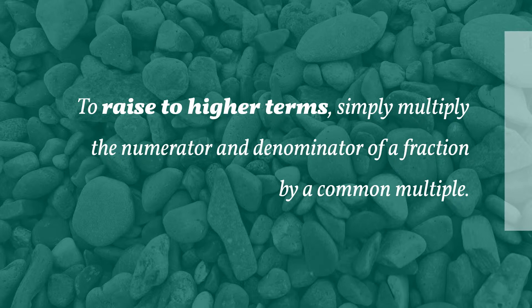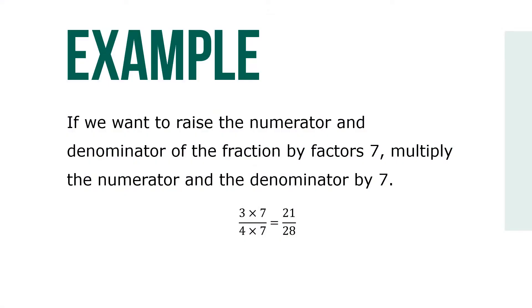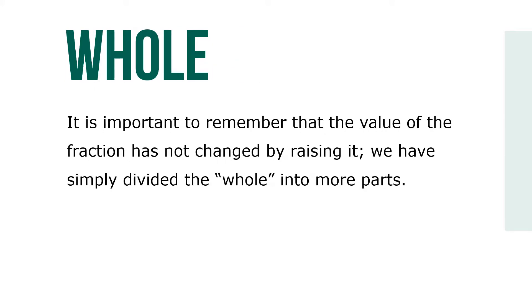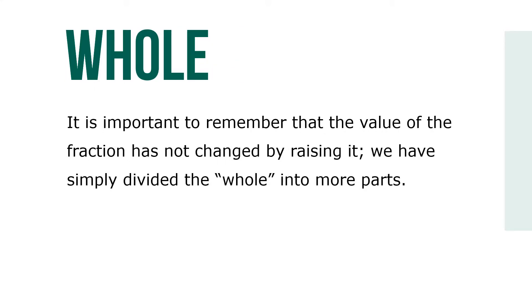To raise a fraction to higher terms, simply multiply the numerator and denominator of a fraction by a common multiple. For example, if we want to raise the numerator and denominator by factors of 7, multiply both by 7. It's important to remember that the value of the fraction has not changed — we've simply divided the whole into more parts.